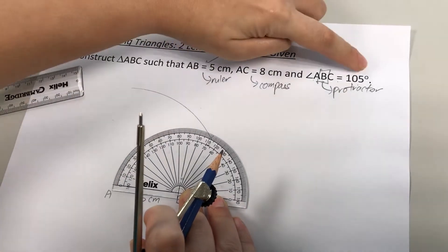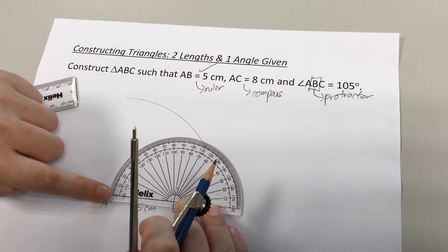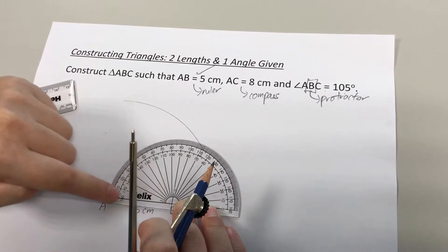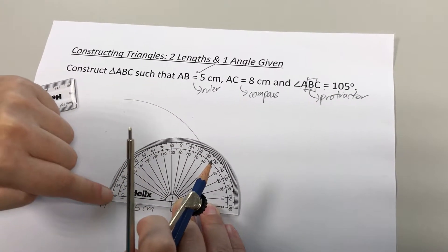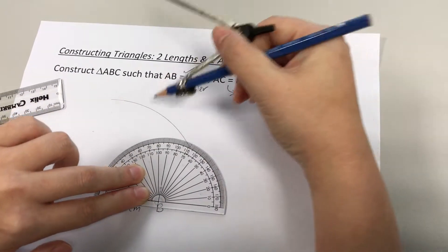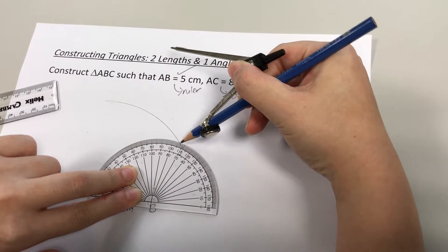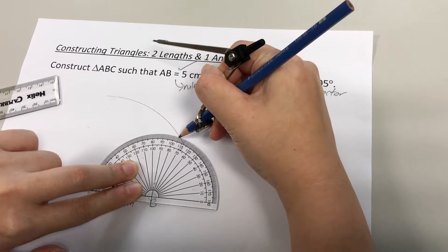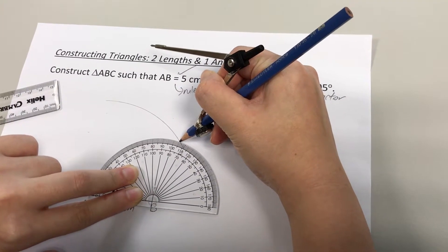In this case, to draw my 105 degrees, I'm going to follow my outer set of numbers because it's the outer set of numbers that points to zero at this starting line AB. So 105 degrees, this is 100, 110, so in the middle is where 105 is.